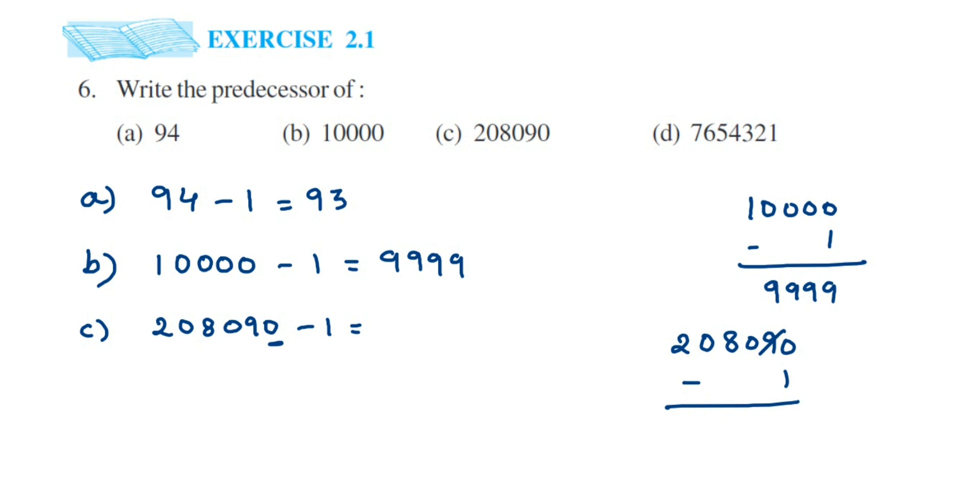So 9 will become 8, and this number will become 10. So 10 minus 1 will become 9, and then we have 8, so write down the 8. The remaining numbers will be the same, so it will be 208089.